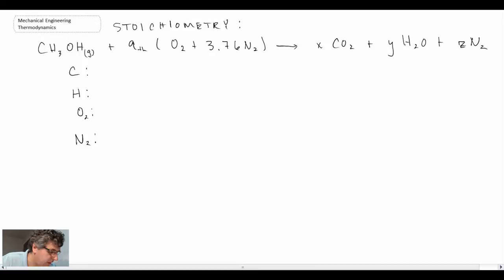So beginning with the carbon balance on the left and the right. We have one on the left and one on the right. X is then 1. For hydrogen, on the left we have all the hydrogen is in our methyl alcohol vapor. So we have 4 on the left. And on the right we have it in the water vapor. So that is 2Y. And with that, that tells us that Y is equal to 2.